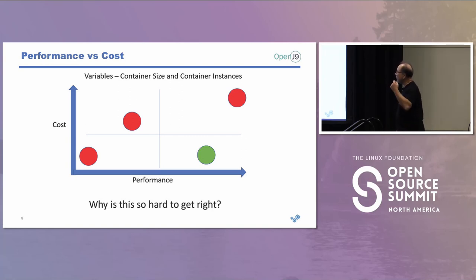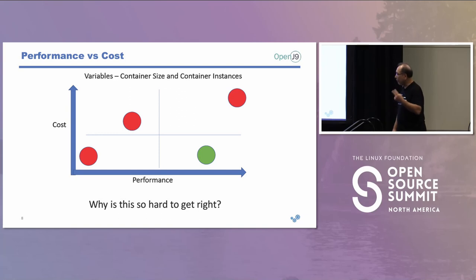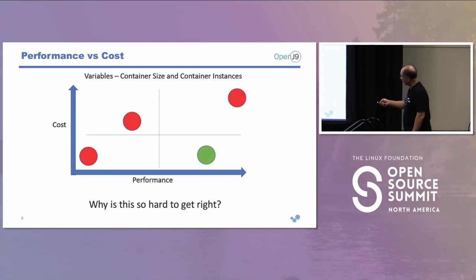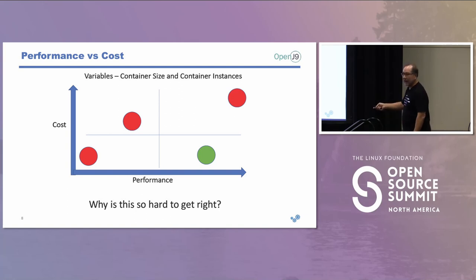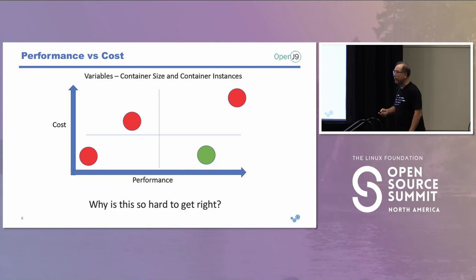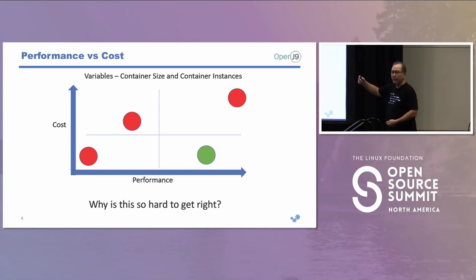Here's the problem: it comes down to performance versus cost, and this is very hard with Java. There are really only two cost variables: the size of your container and how many instances you need to run — both related to resources. Minimal cost means undersized containers and not enough instances, giving unacceptable performance. Oversized containers with too many instances give great performance but terrible cost. Finding that sweet spot is very hard.